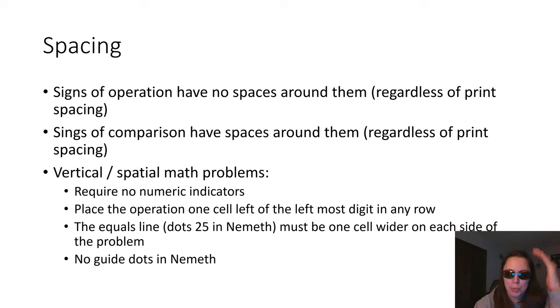Vertical, spatial math problems, those ones that are aligned by place value from top to bottom, do not require any numeric indicators in braille. This makes it really easy for times worksheets or adding worksheets for young children to be efficient on their space. In those spatial problems, we place the operation, the plus or the minus, one cell to the left of the leftmost digit in any row. The equals line at the bottom is a bunch of dot two fives in Nemeth. Notice that's different than UEB technical. And it must be one cell wider on each side of the problem. There are no guide dots used in Nemeth when you're doing a vertical alignment. It is one of the times where spatial alignment is the only alignment.